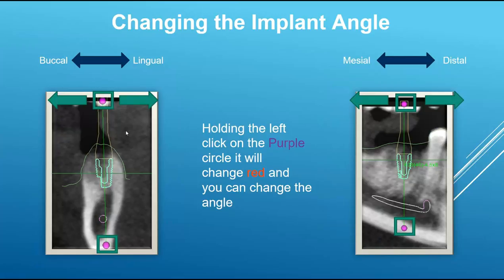To angle the implant, there are purple dots above and below the implant. On the top-left screen, angling the implant adjusts it buccolingually. On the top-right screen, angling it adjusts it mesiodistally. If you angle from the top of the implant, you're angling the top body of the implant; if you angle from the bottom near the apex, you're angling more of the apex of the implant.